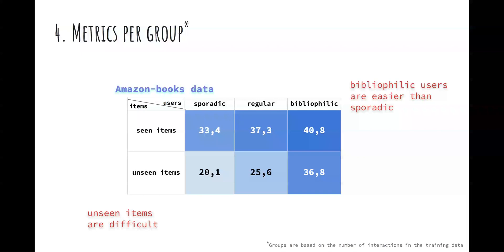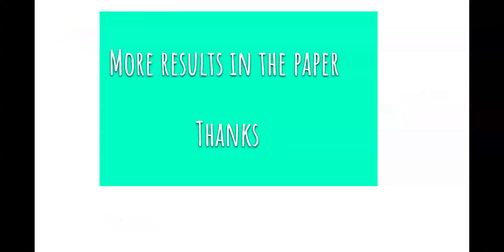Finally, we break down the overall performance of the model into six user-item groups based on the amount of interaction they have in the training set. The performance varies significantly across different groups, with bibliophilic users and seen items being the easiest to make inference for. Such analysis is important to help identify the groups where the model's performance stagnates.